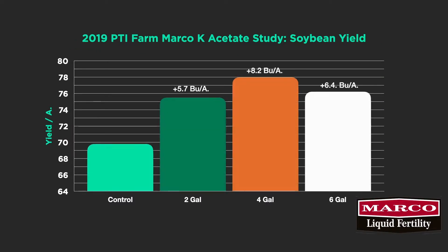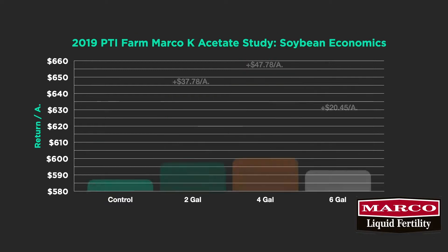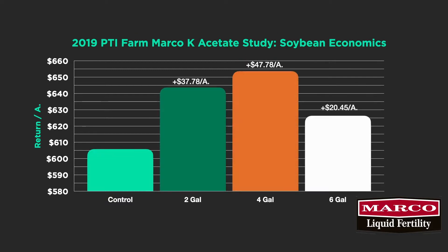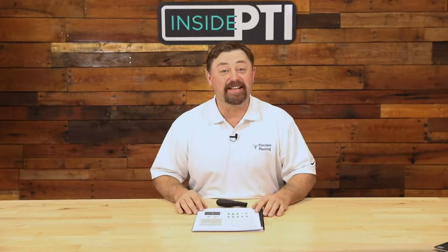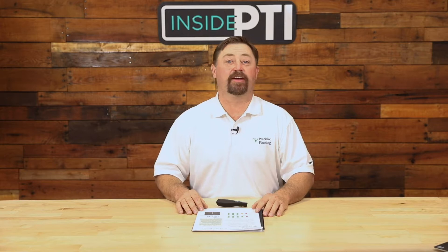We're also looking at a potassium acetate product from Marco Fertilizer out of Clinton, Illinois — a clear product that applies very nicely. Running this at two, four, and six gallons per acre on soybeans, we're seeing up to eight bushel responses, with some results approaching forty-five to fifty dollars per acre net profit. Definitely seeing a strong response from potassium.